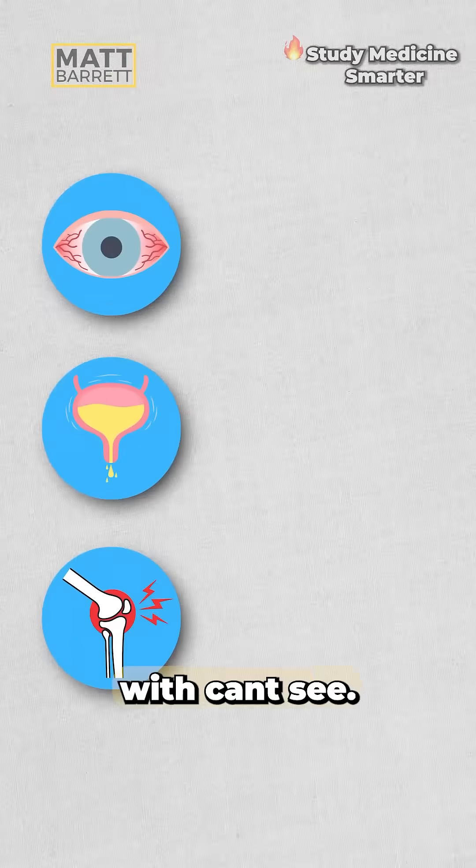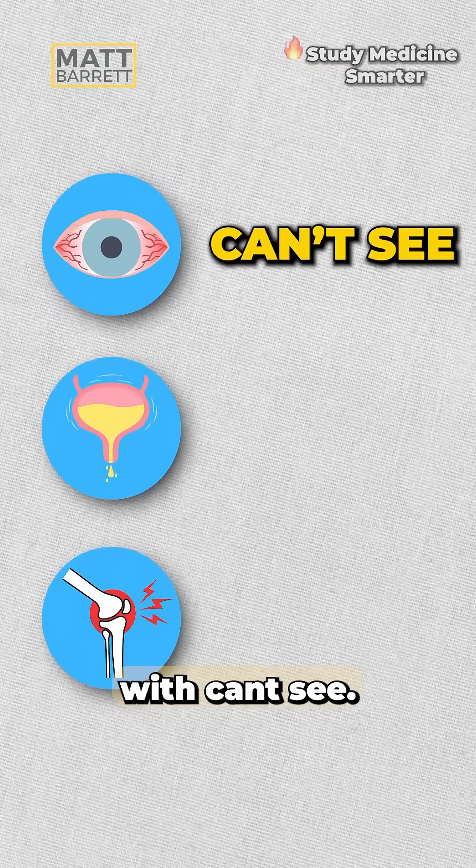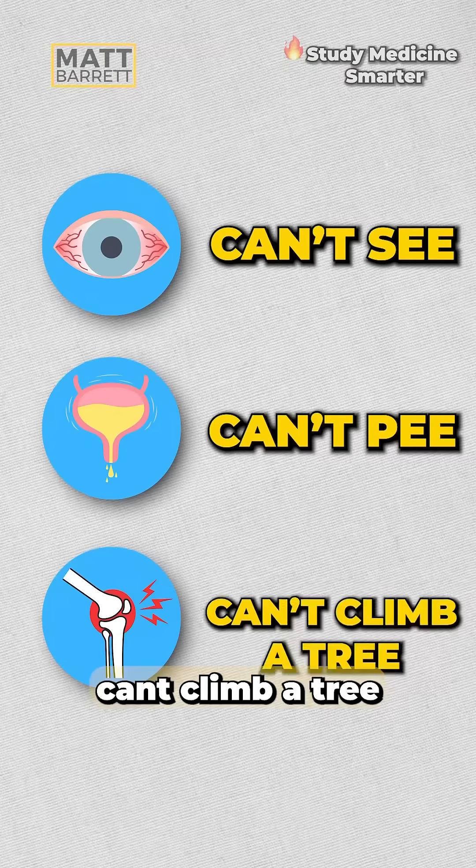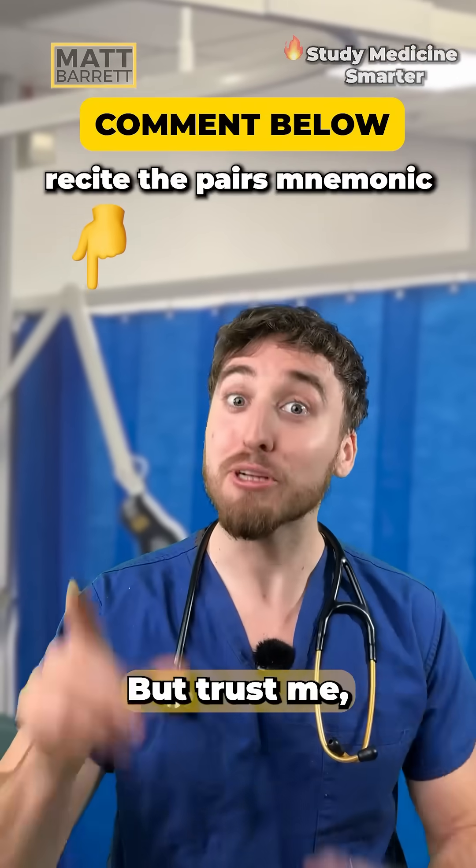Remember reactive arthritis's features with: can't see, can't pee, can't climb a tree. And now you know.